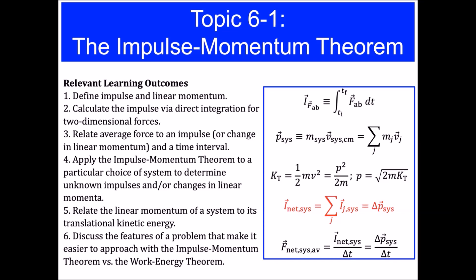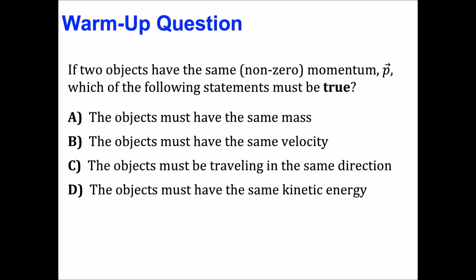So with that as a beginning, let's look at a warm-up question that basically asks the following. If two objects have the same non-zero momentum p, which of the following statements must be true? Do the objects have to have the same mass? Or do they have to have the same velocity? Or do they need to be traveling in the same direction? Or must they have the same kinetic energy? Think about this, we'll pause the video and get back to you with the solution.